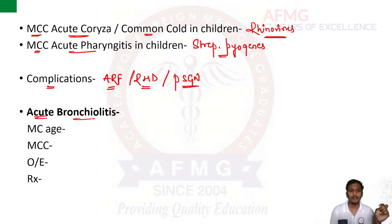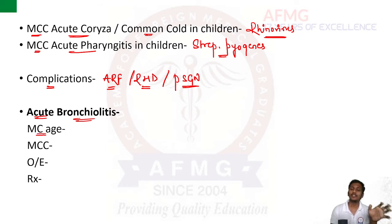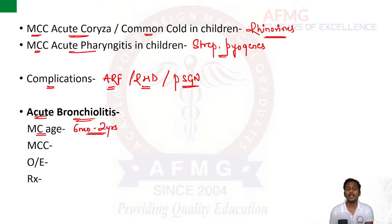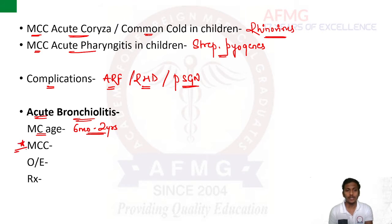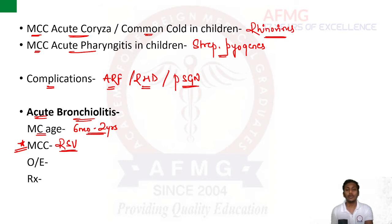Regarding acute bronchiolitis: bronchiolitis is inflammation of the lower airways — the bronchioles. The most commonly affected age group is 6 months to 2 years. The most common cause of acute bronchiolitis is RSV — Respiratory Syncytial Virus. Other viruses like influenza virus, parainfluenza virus, and adenovirus are also known to cause acute bronchiolitis.